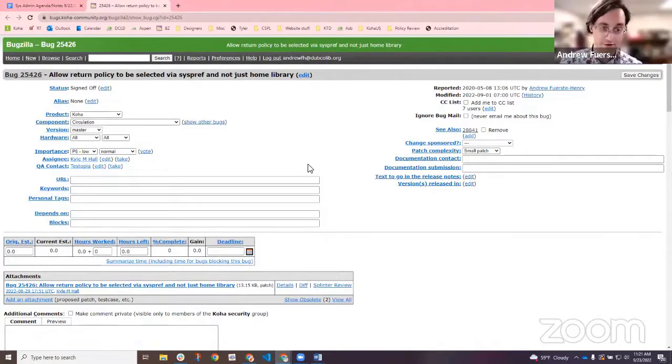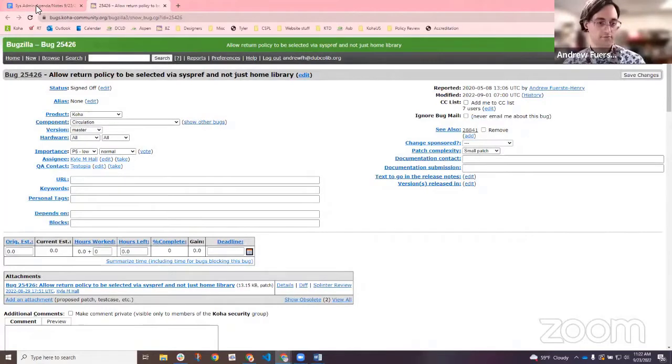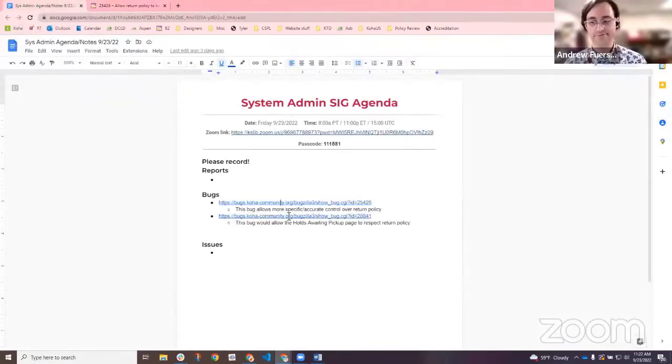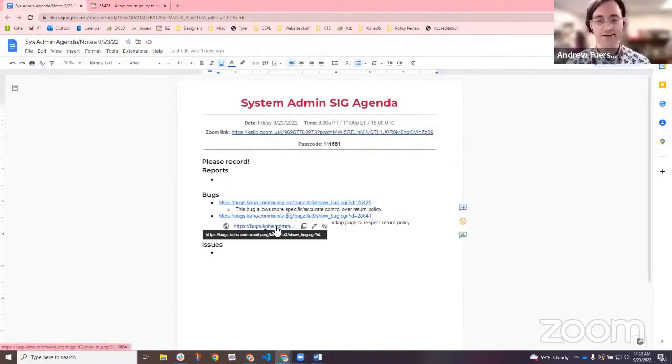This is all about what happens when an item gets checked in, whether it floats or returns home and making Koha better able to enforce rules about how that works. There's nothing I personally need from the group on this. That's not why I'm bringing it here. I'm just sort of bringing it to say, Hey y'all, this exists. Maybe this has been impacting you and you haven't even known it. Let's make a little stink on bugs and get some attention of people and see if we can't get it moving forward. I'd be happy to go into greater detail about exactly how this all works. But anyway, this is bug 25426, allow return policy to be selected via syspref and not just home library.